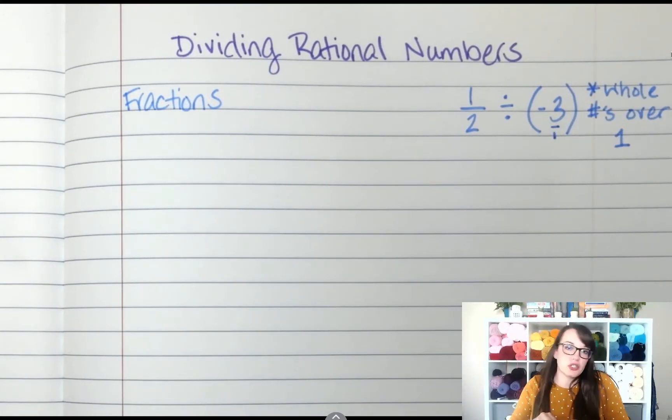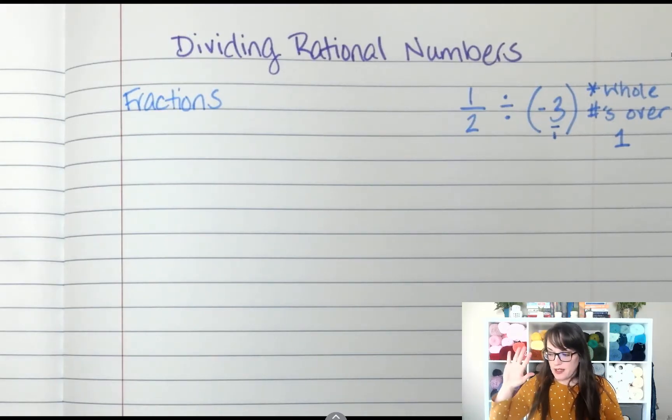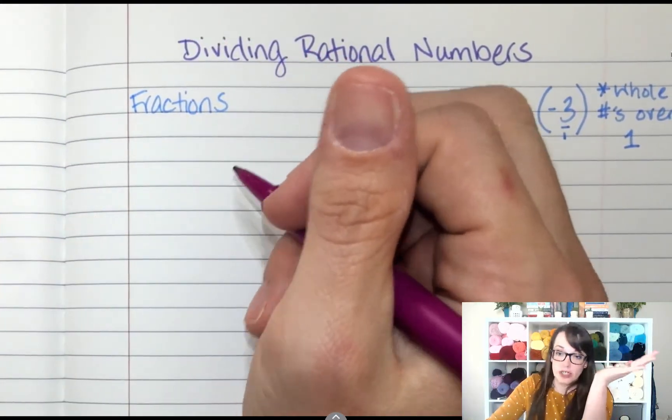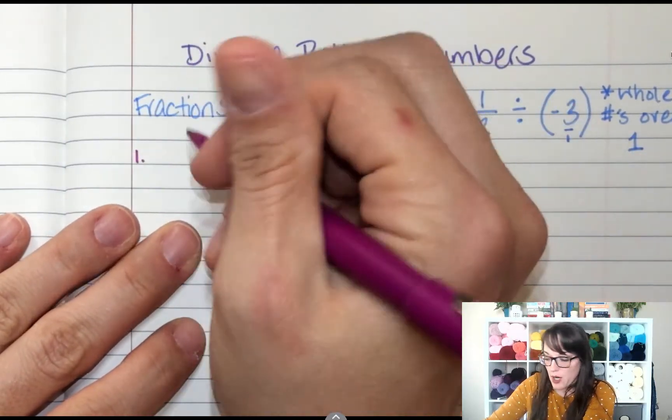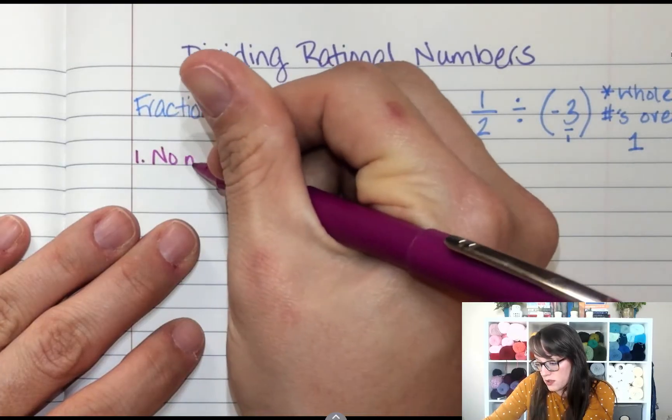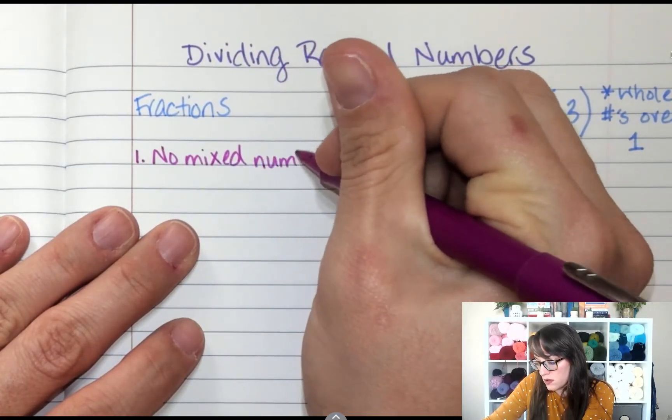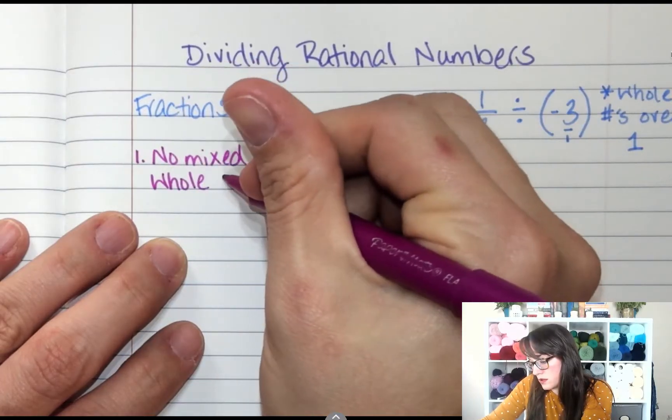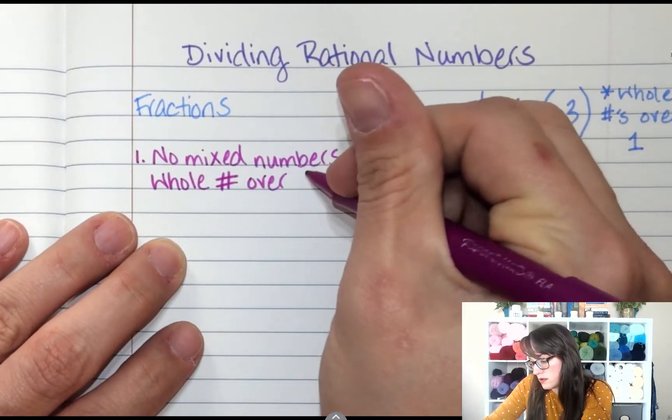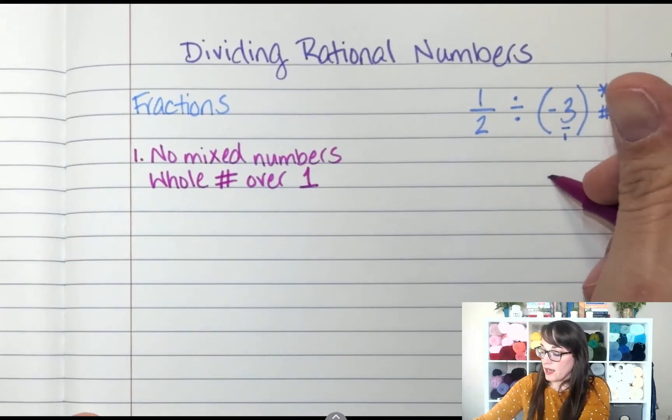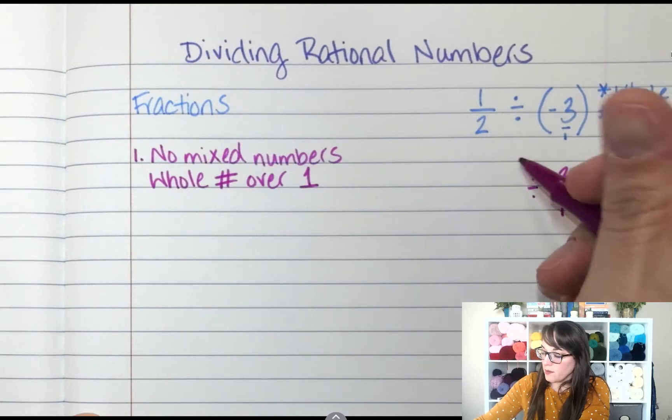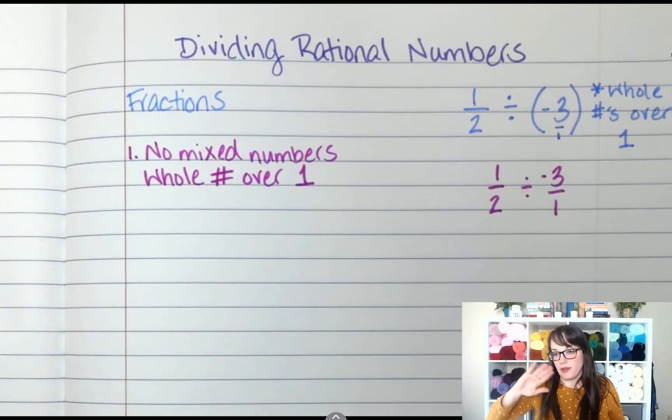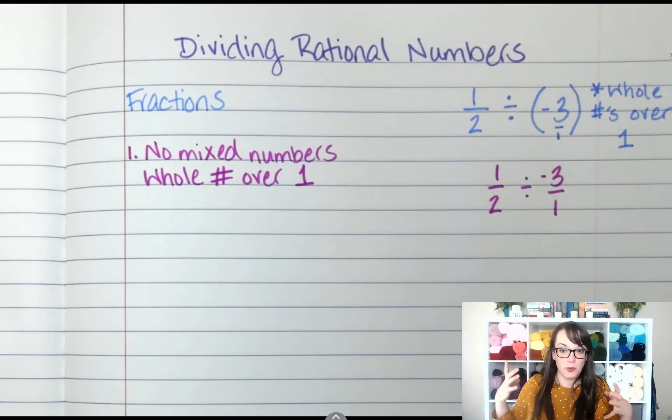All right, so when I'm dividing fractions, the first thing you need to do is make sure all of your fractions are improper—no mixed numbers—and whole numbers go over 1. So this one, I've got negative 3 over 1, and I am dividing 1/2 by that. The first thing I have to do is make sure that my problem is set up correctly so that I can do the next thing, which is keep change flip.